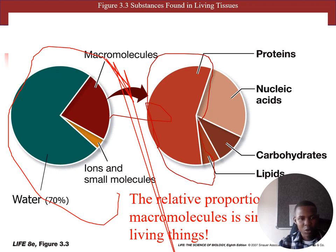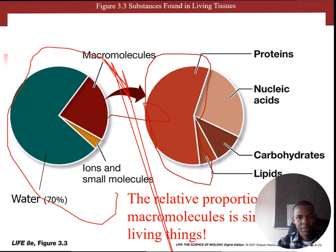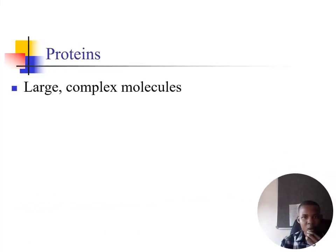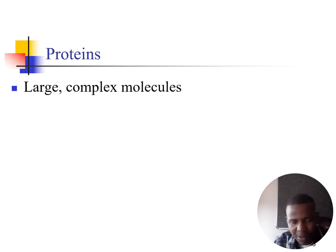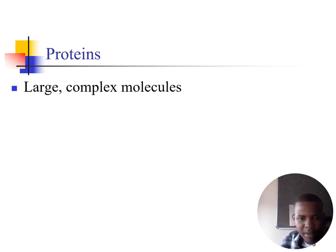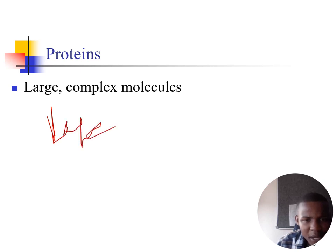Proteins are large, complex molecules. They are made up of monomers — smaller units called amino acids. Just as carbohydrates are made up of saccharides, proteins are made up of amino acids which are attached to one another in chains. An amino acid linking to another amino acid linking to another forms a protein.